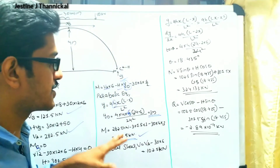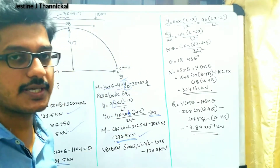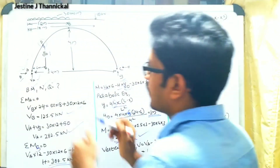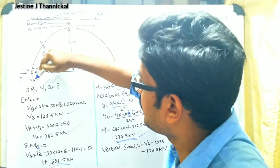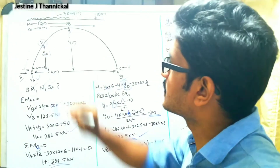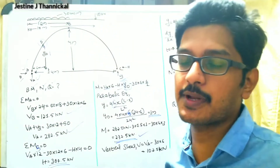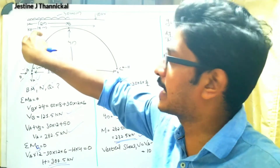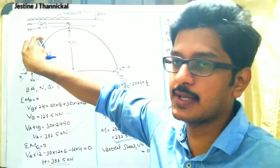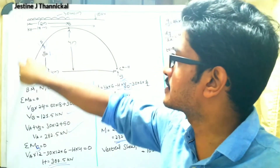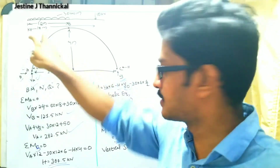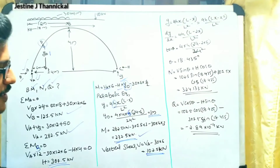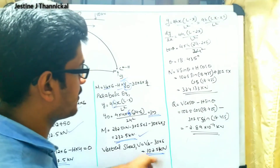Next, we find the vertical shear at point D. Considering the forces from the left side — VA minus the UDL of 30 kN per meter over 6 meters — we get vertical shear Vd equals VA minus 30 multiplied by 6, which gives vertical shear at point D equals 102.5 kilo Newton.